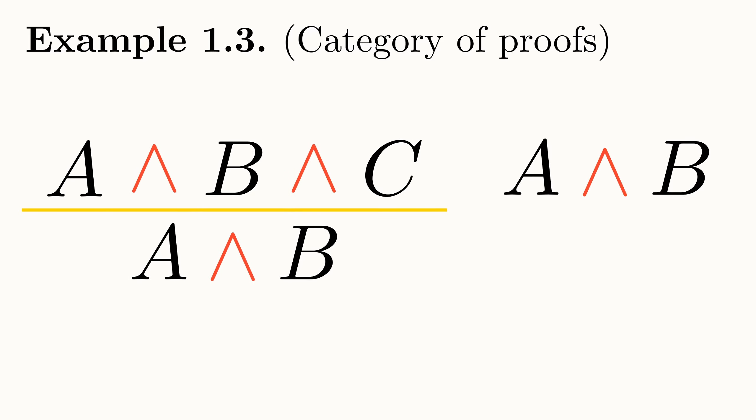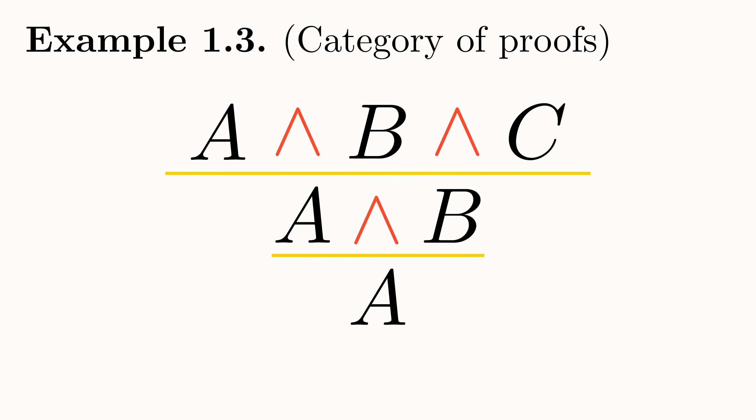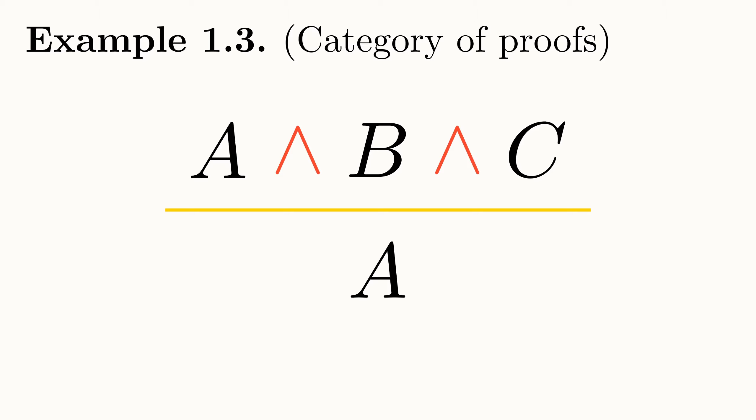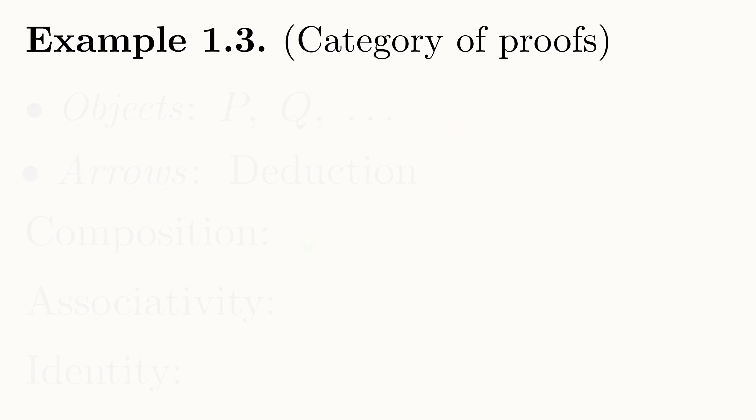Secondly, assume A and B is true. That is, both A and B are true propositions. Then we can infer that A is true. Putting these together, we get a proof that A is true if we assume A and B and C is true. This makes complete sense and hopefully convinces you that composition of proofs is well defined in this category. This is trivially associative, so fits our criteria for composition in our category.